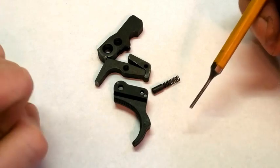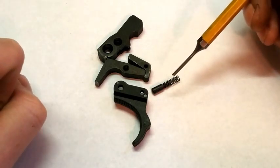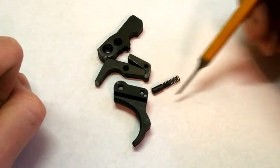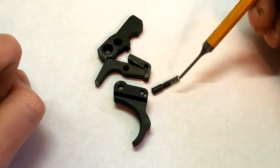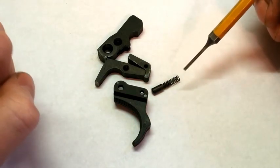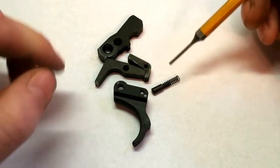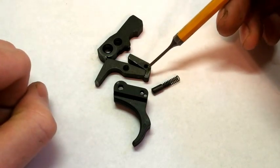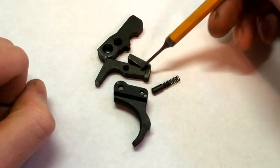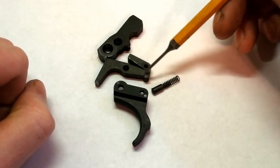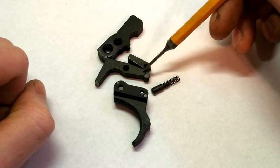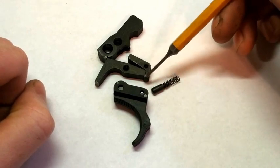The common fix is to go back to your factory weight spring. But in my opinion, that's just a band-aid. That's just forcing the parts to do what they're supposed to with heavier springs instead of actually fixing the problem, which is the friction and how rough the parts are right in here between the back face of the sear and that little lip on the disconnector.